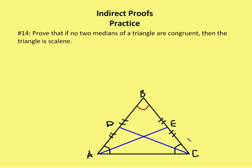I've shown that AD, DB, BE, and EC are congruent. As part of the indirect proof, I'm going to assume that AB is congruent to BC, so that I have an isosceles triangle — I'm going to assume that I don't have a scalene triangle. In that case, I know that angle BAC is congruent to angle BCA. And if the angles are congruent, the sides opposite them are congruent, so I know that AB is congruent to BC.